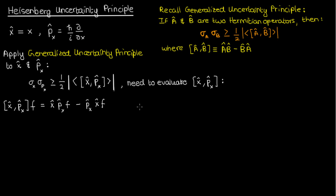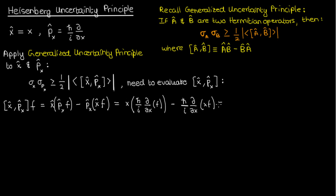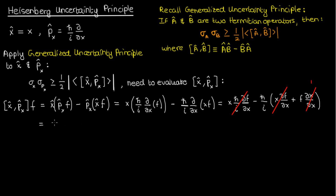Keep in mind that the second operator isn't operating on the first one — it's operating on the first operator combined with the actual function, so I'm just going to write parentheses to prevent confusion. Now let's use the actual values of the operators. We'll use the product rule because we're taking the derivative of x times f. These two terms are going to cancel because they're exactly the same, and dx/dx is just one, so it turns out that our commutator expression is negative ℏ over i times f, which is iℏ times f if you move the imaginary number up to the numerator. Therefore the commutator between x-hat and p_x-hat is iℏ.